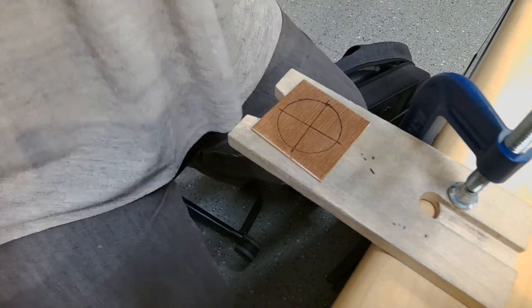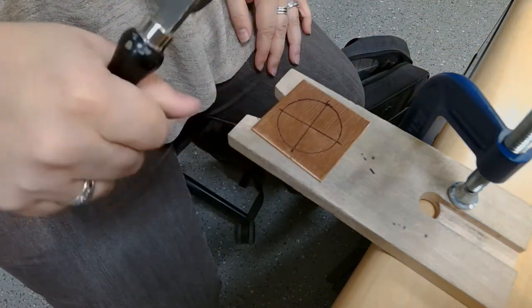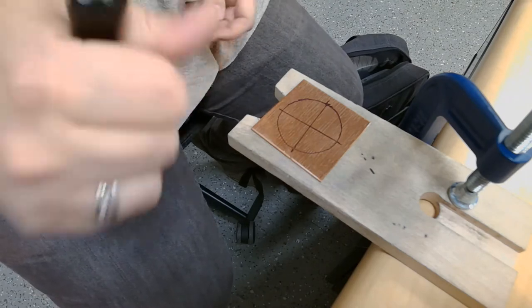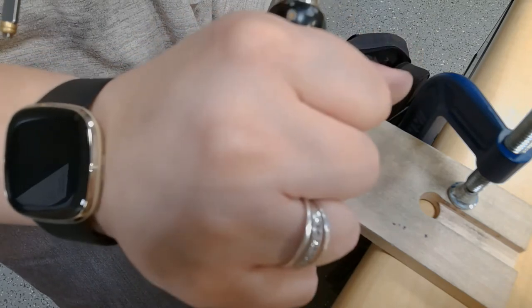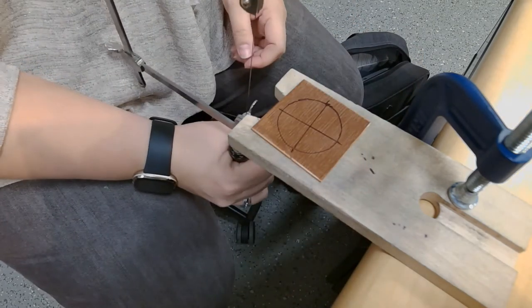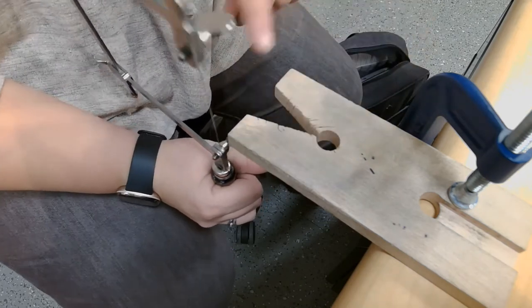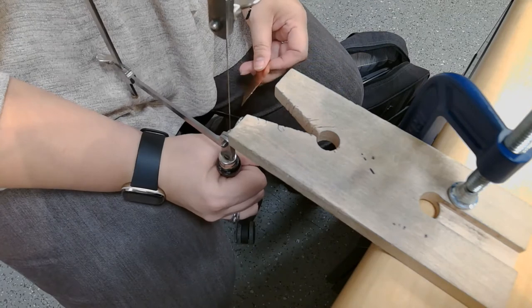You're not holding your jeweler's saw with a death grip, like white knuckles. Try to keep a loose handle on it. You're going to hold it in a fist. And it's going to go straight up and down. And you're cutting in the middle here, in this little groove in the middle of your bench pin.